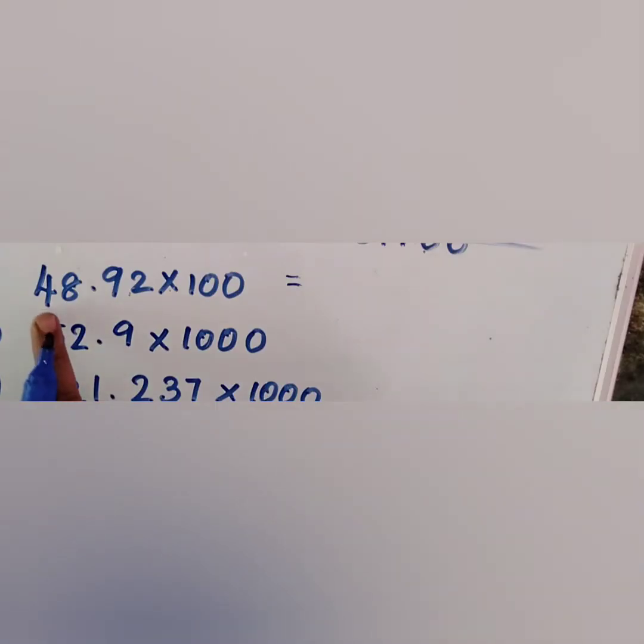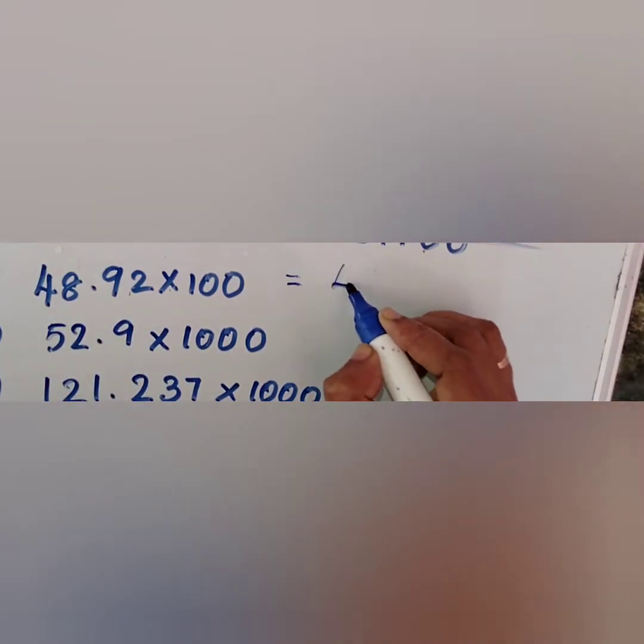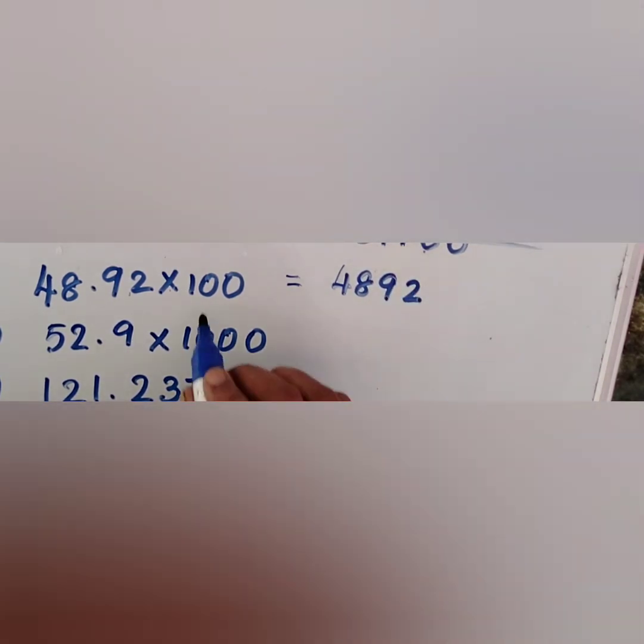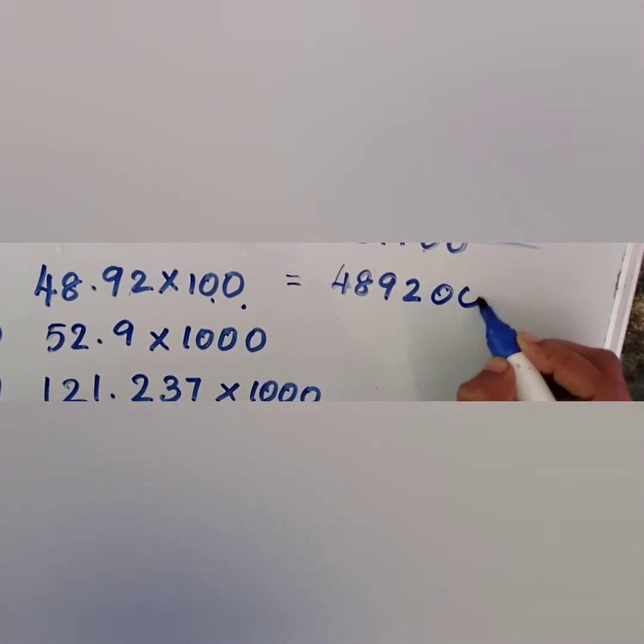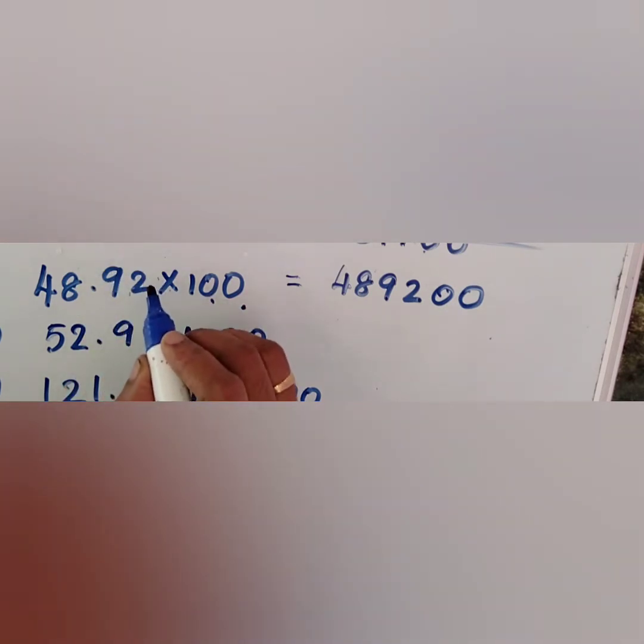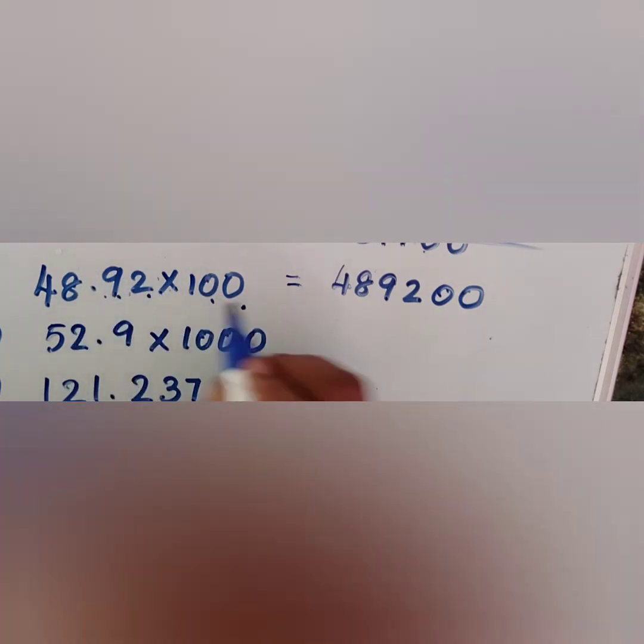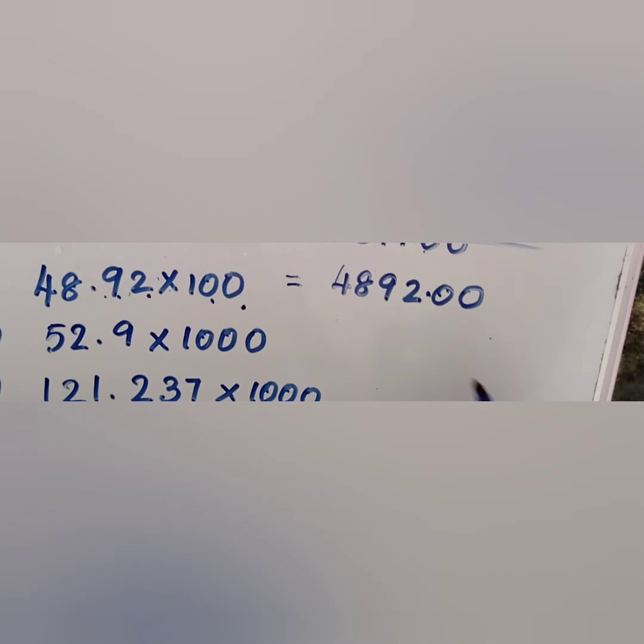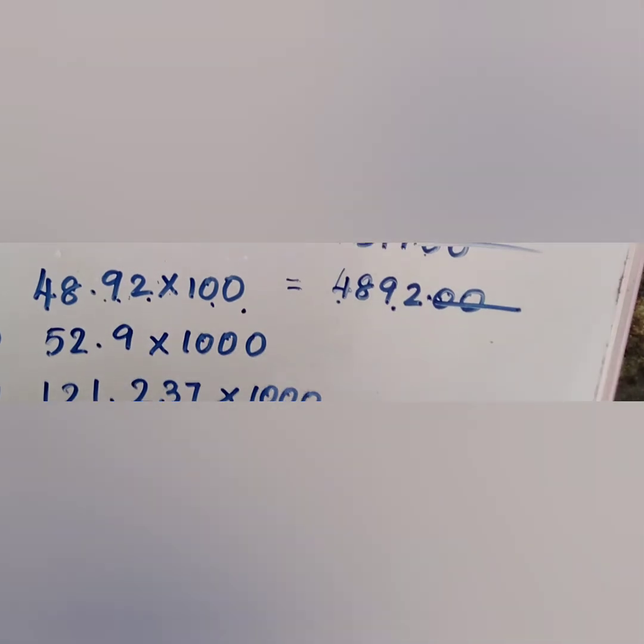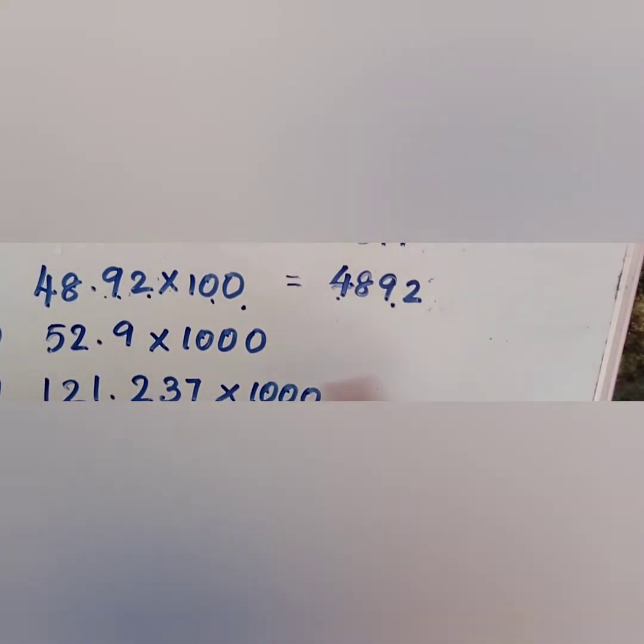Next question, 48.92 into 100. Here, we have to shift the decimal point to two places. That is, this decimal point comes in the place of zero and those zeros are neglected. Our answer is 4892.